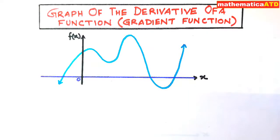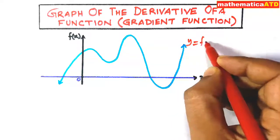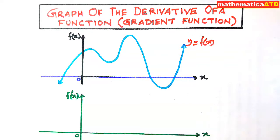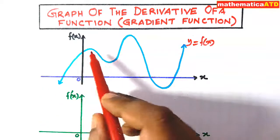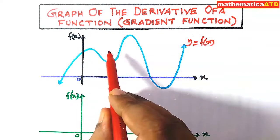Let us consider that this is our function y = f(x). We shall now sketch a rough sketch of the graph of f'(x), which is the gradient function. This graph will be made by joining the values of the slopes of the given function. On this graph there are infinite number of points.